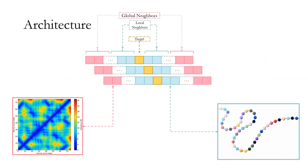For each target we use a sliding window with information from the sequence, which we call local neighbors. We also use the contact map to find neighbors that are close to the target based on the 3D structure, which we call global neighbors. We add these global neighbors to the already established windows, so finally we have created a 2D matrix for each target and use it as an input to the final architecture.